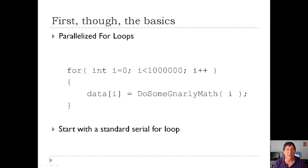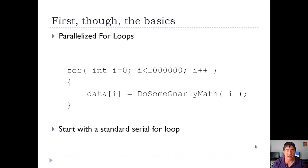Before we go beyond the basics with OpenMP, let's take a look at the basics. We'll start with simple parallelized for loops. What you see here is a normal serial or sequential for loop. It loops through a million times, does some gnarly math, and then records it into the data array.